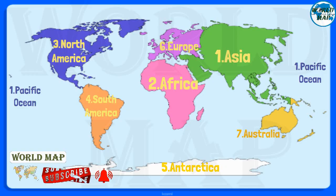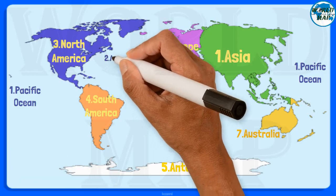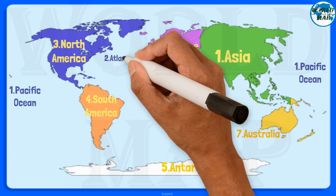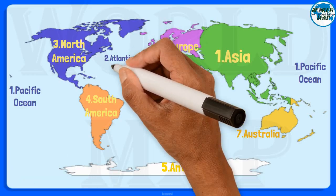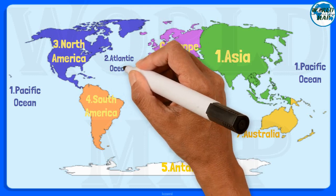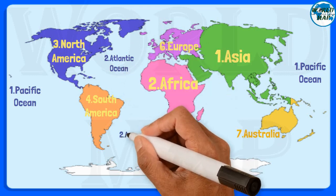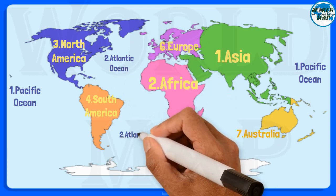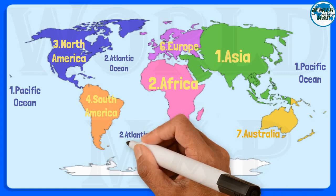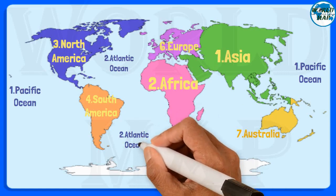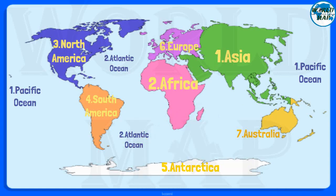Number 2: Atlantic Ocean. The Atlantic Ocean is situated between the Americas and the European and African continents. It is the second largest and saltiest ocean in the world.